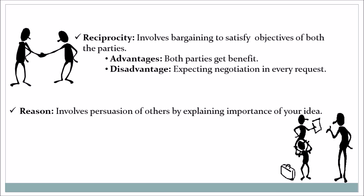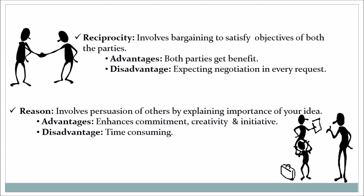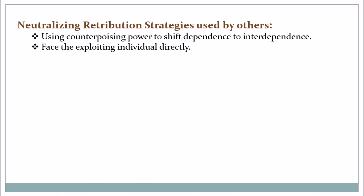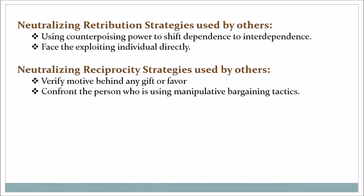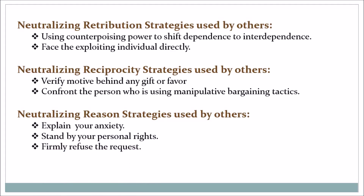Reason involves persuasion of others by explaining the importance of your idea. Advantages include enhanced commitment, creativity, and initiative. The disadvantage is that it is time-consuming. Neutralizing retribution strategies used by others: use counterpoising power to shift dependence to interdependence, and face the exploiting individual directly. Neutralizing reciprocity strategies: verify the motive behind any gift or favor, and confront the person using manipulative bargaining tactics. Neutralizing reason strategies: explain your anxiety, stand by your personal rights, and firmly refuse the request.